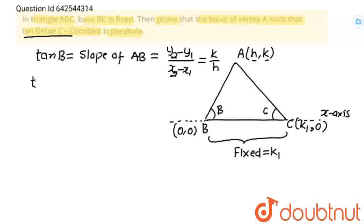Now I am going to find tan C. See, this angle is inclination, so this will be pi minus C. We have to find tan C. So, first of all I am going to find tan pi minus C. Why tan pi minus C? Because tan pi minus C is slope. So, tan pi minus C is equal to slope of line AC and slope formula is this only. So, for using this formula we can write k minus 0 upon h minus k1.